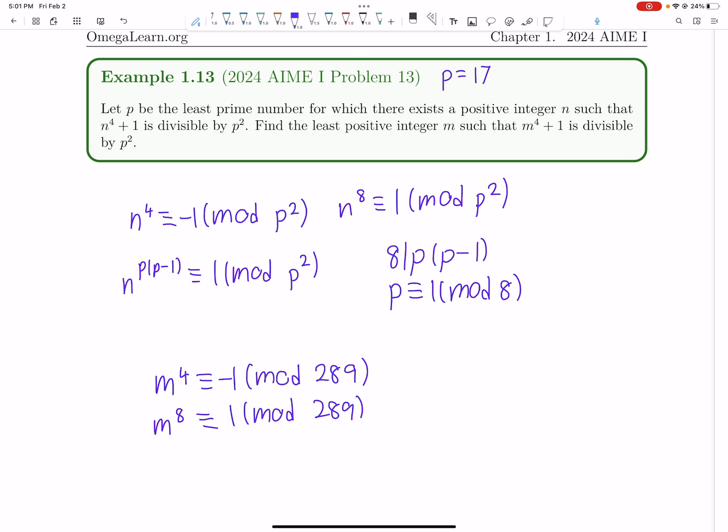So first thing, it's a good idea whenever you have these kind of square mods, p squared, it's a good idea to just first look at mod 17, and then after that, consider mod 289.